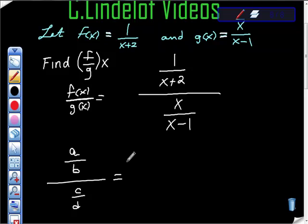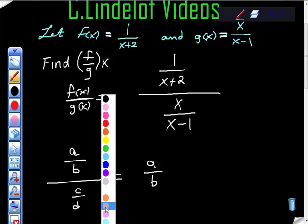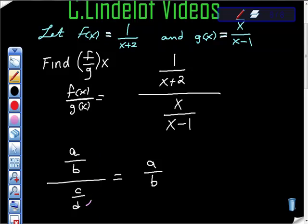We bring the a over b over, leave it exactly the way it was, and we take the reciprocal of the denominator. That is, we flip this thing over. So we're going to multiply, not by c over d, but d over c, and we're just going to multiply straight across the way we do with fractions, and we get ad over bc. So here's the theorem.